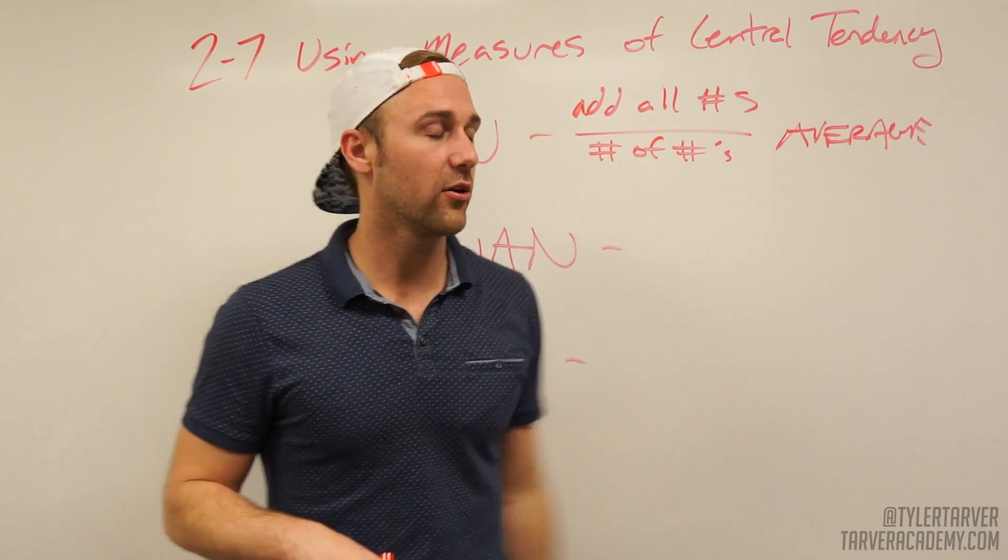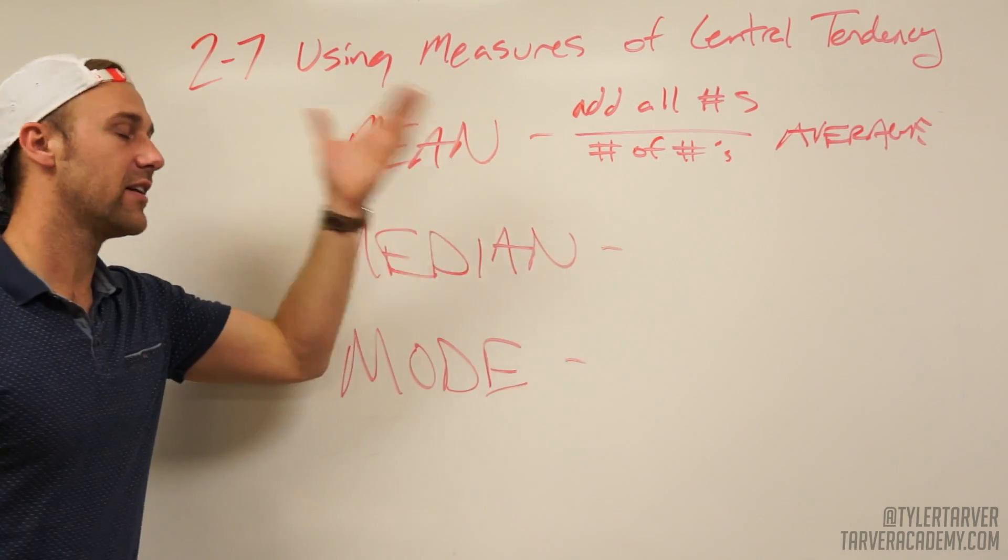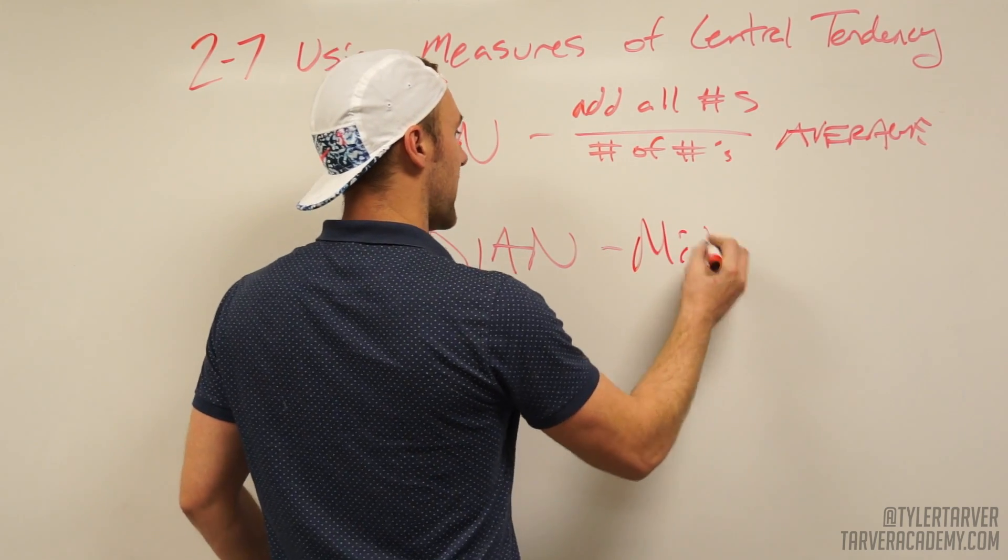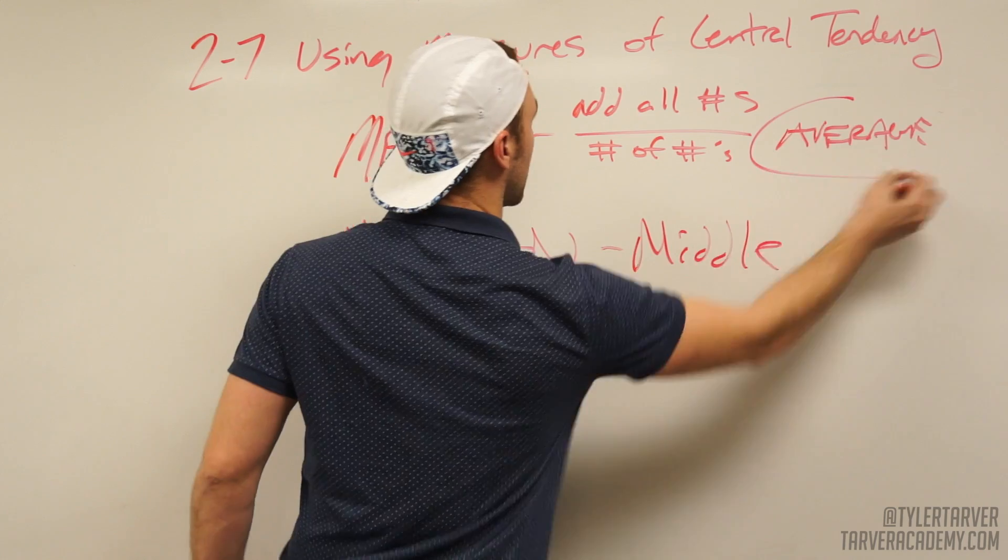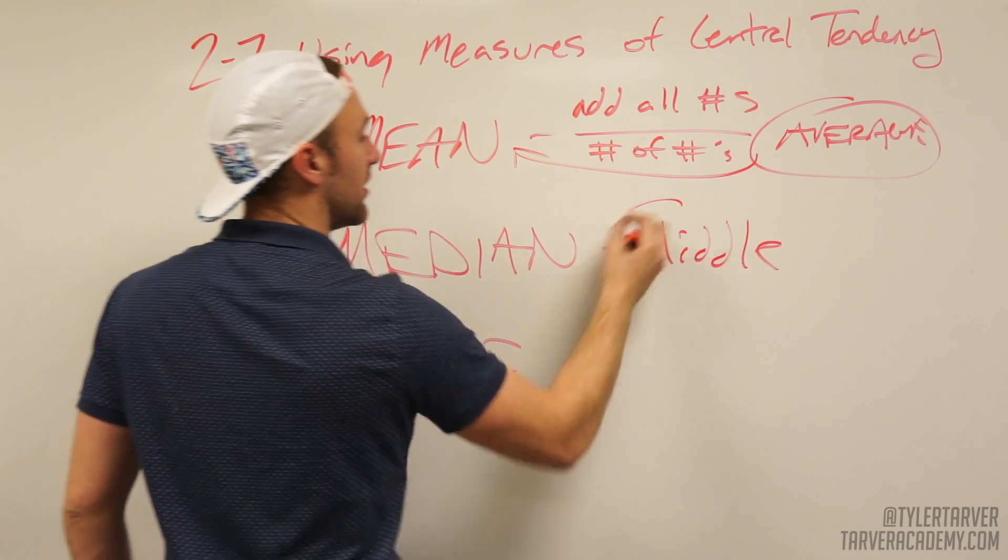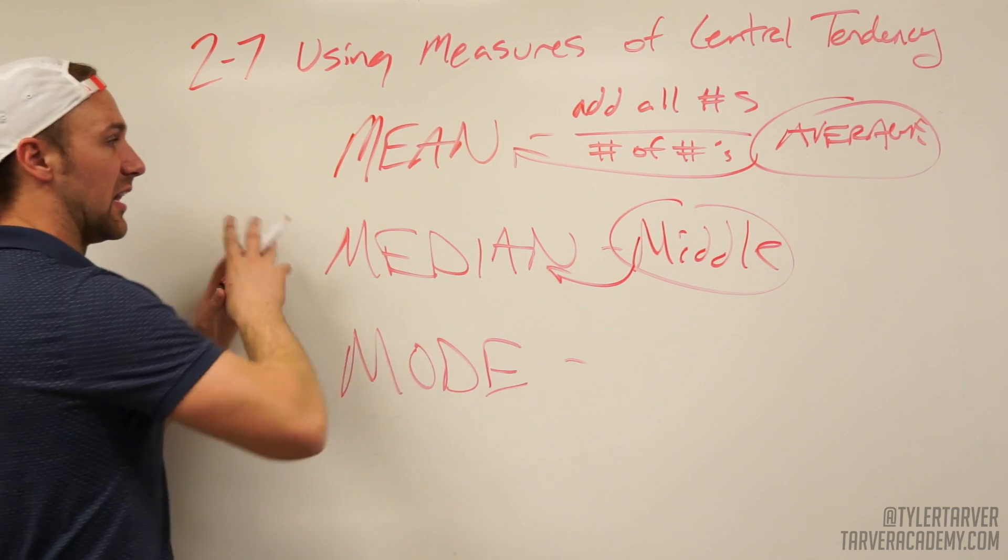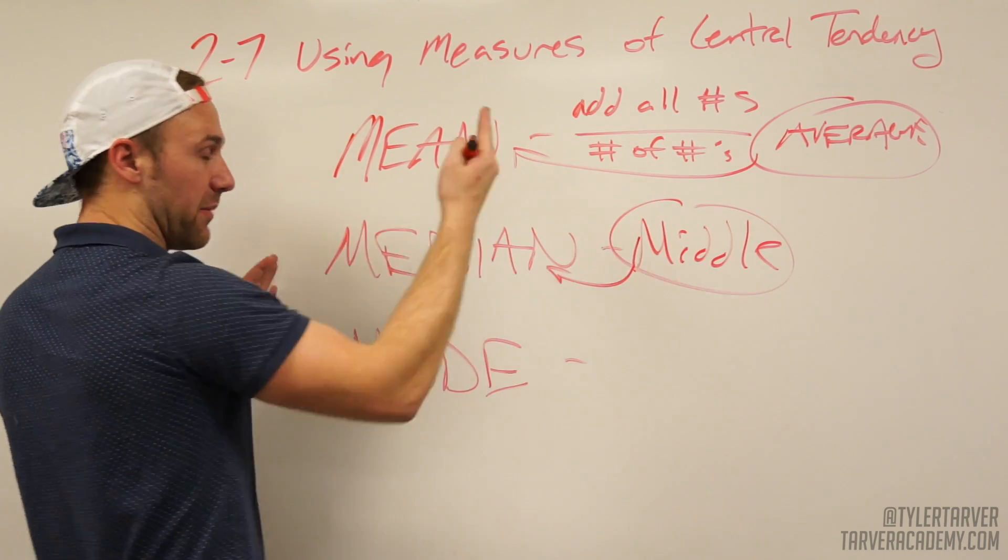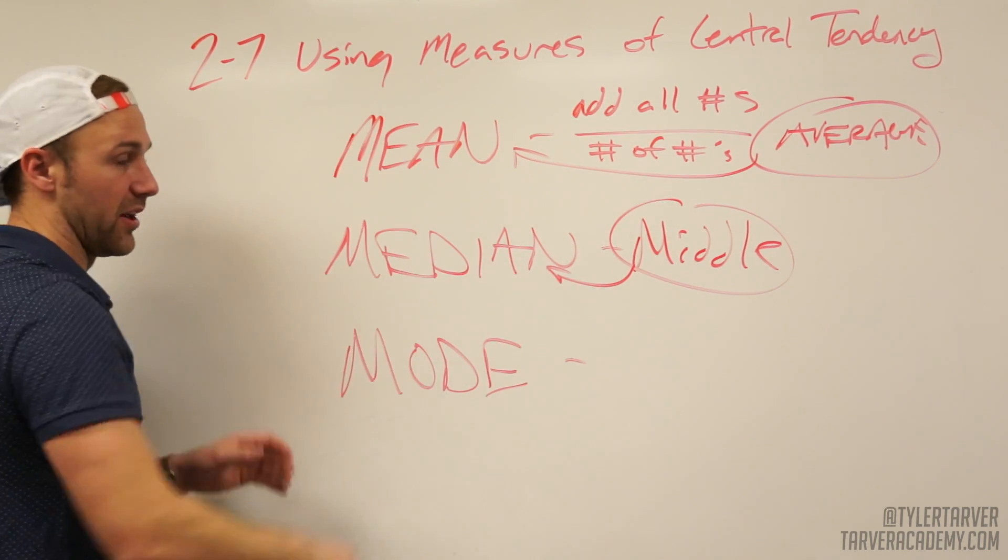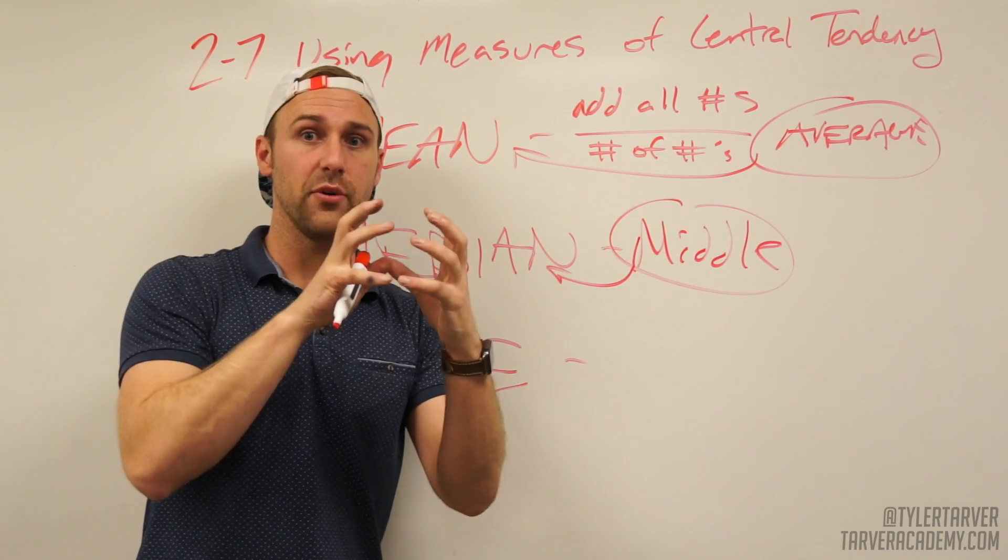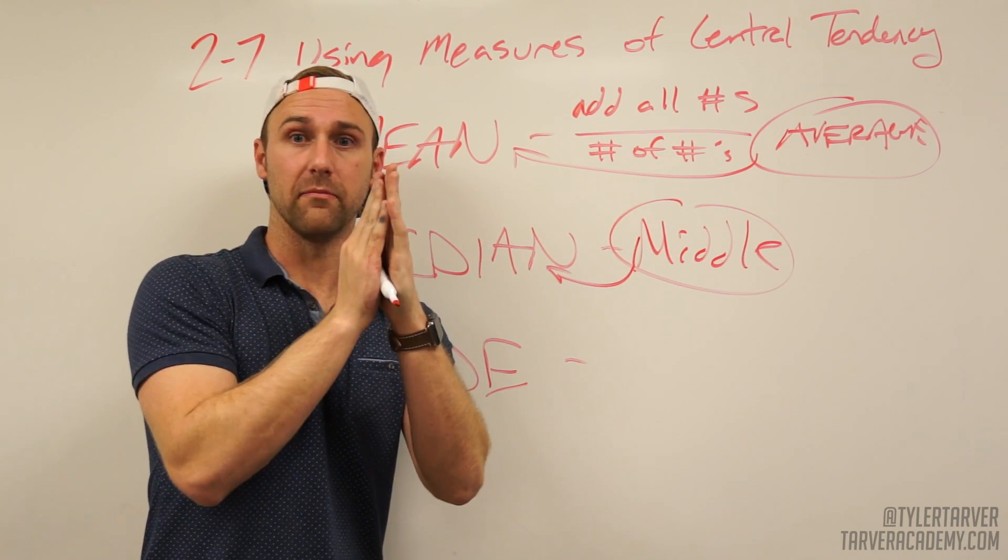Median - that's the middle. If you take all your numbers, line them up in a row and pick out the middle one. You put them in order, pick out the middle number. If you have an even number, like ten numbers, then you take the two middle numbers and find the middle number between them - you average those together.